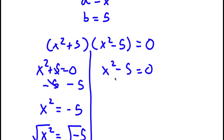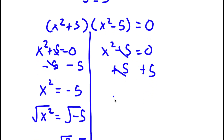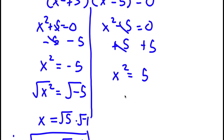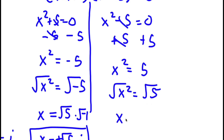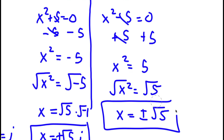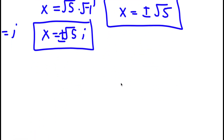For x squared minus 5 equals 0, I'm going to add 5 on both sides, so these two cancel out. Now I'll have x squared is equal to 5. If I take the square root on both sides, the square root of x squared is x, and the square root of 5 gives positive or negative square root of 5. So these are two more solutions to this problem.